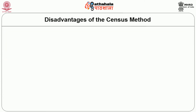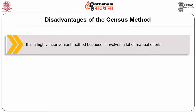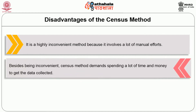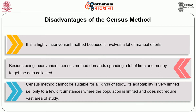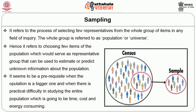There are a few disadvantages of the census method. It is a highly inconvenient method because it involves a lot of manual efforts. Besides being inconvenient, it demands spending a lot of time and money to get the data collected. The census method cannot be suitable for all kinds of study — its adaptability is very limited, applying only to a few circumstances where the population is limited and does not require a vast area of study.